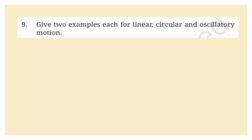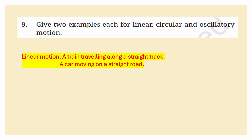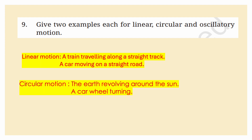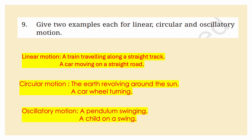Give two examples each for linear, circular, and oscillatory motion. Linear motion: a train traveling along a straight track, a car moving on a straight road. Circular motion: the Earth revolving around the Sun, a car wheel turning. Oscillatory motion: a pendulum swinging, a child on a swing.